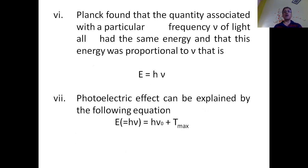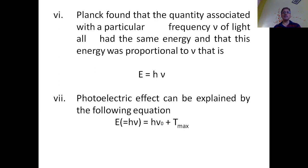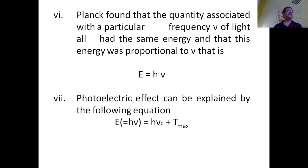Planck found that quanta of a particular frequency ν all have the same energy, proportional to ν: E = hν, where h is Planck's constant. The photoelectric effect can then be explained using Einstein's relation: hν = hν₀ + T_max. Here hν is the energy of the incident electromagnetic radiation, ν₀ is the threshold frequency, hν₀ is the work function, and T_max is the kinetic energy carried away by the ejected electrons. Thus out of hν, the energy hν₀ is used to eject the electron, and the remainder hν − hν₀ becomes the kinetic energy of the electron.